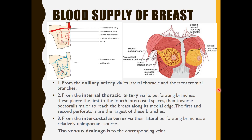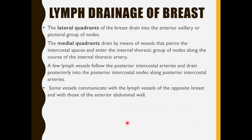The blood supply of the breast comes from: the axillary artery via the lateral thoracic and thoracoacromial branches; the internal thoracic artery via its perforating branches that pierce the first to fourth intercostal spaces, then traverse the pectoralis major muscle to reach the breast along its medial edge — the first and second perforators being the largest; and the intercostal arteries via their lateral perforating branches. Venous drainage is to the corresponding veins: the axillary vein, internal thoracic vein, and intercostal veins.